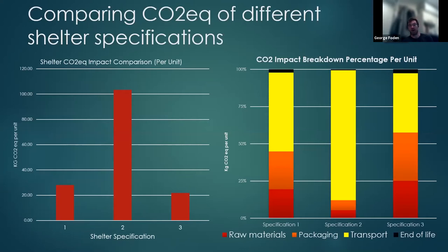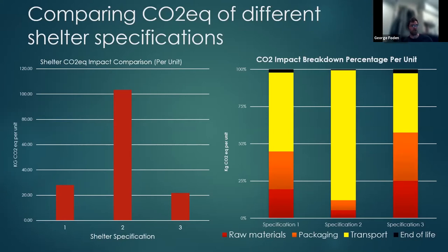These are the sorts of outputs you can get from the tool. In this example we're comparing three different shelter types. On the left-hand side you can see that shelter specification two has a much higher CO2 equivalent impact than shelters one or three — something that would be flagged in your decision making or procurement process. On the right-hand side is the CO2 impact breakdown percentage per unit. What you can immediately see in specification two is that transport — the yellow part of the bar — is accounting for about 90% of the impact of that shelter specification.